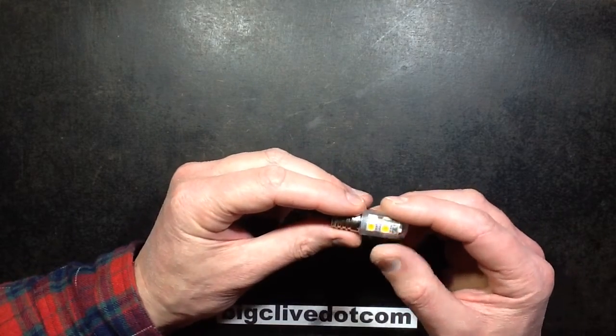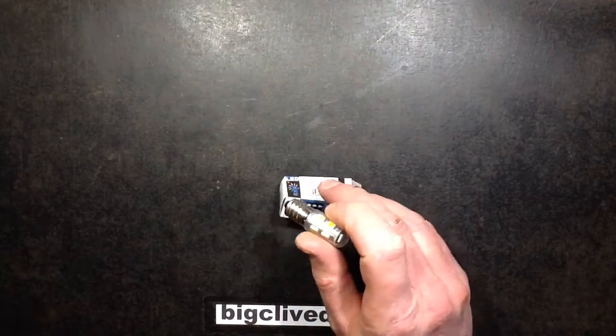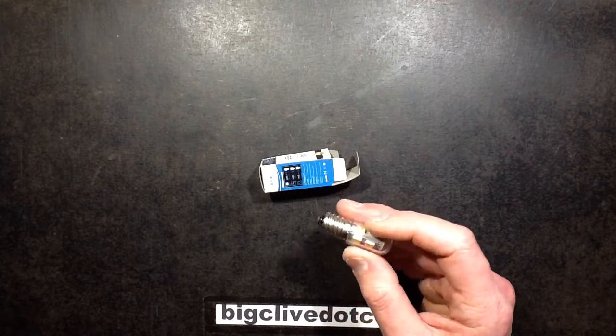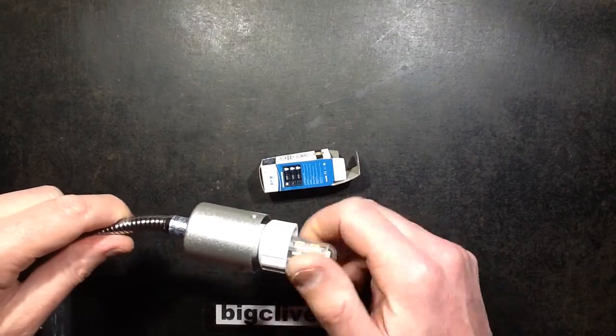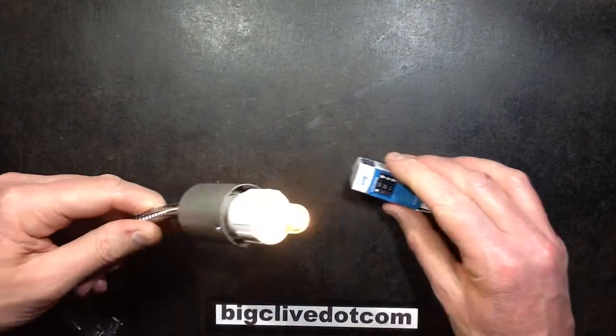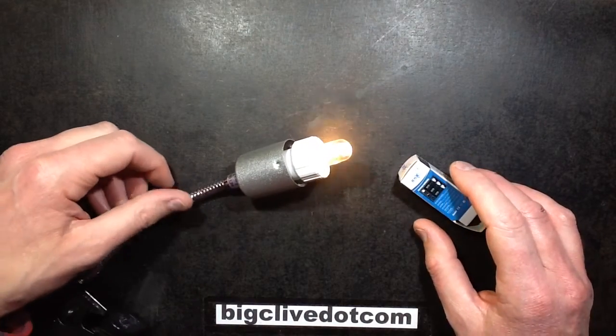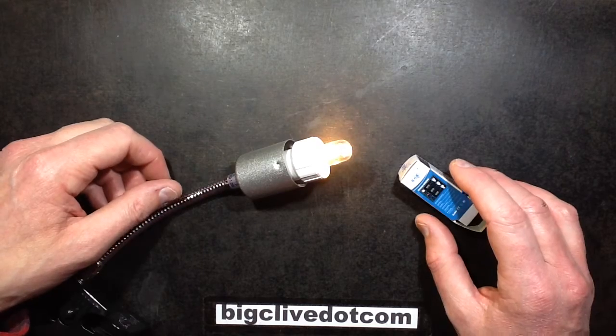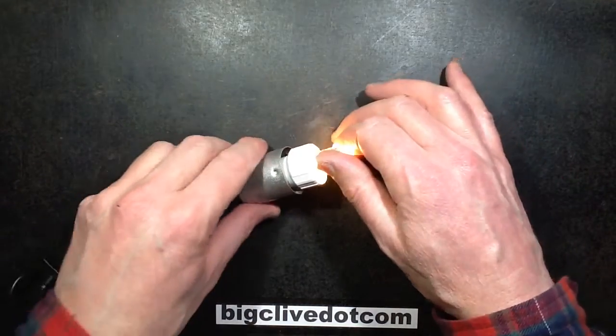So each of them has three chips so it's probably got about 21 LEDs in it. Now where's the lamp holder? I'll just plug this in and we'll check its power. It's quite a neat little thing. Warm white and it's coming up on the meter as 1.2 watts. So a typical one-watt style LED lamp.